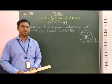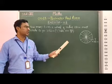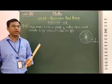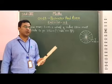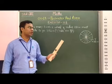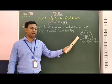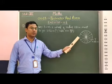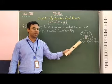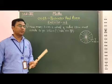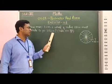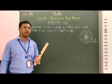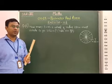Students, first of all, we have to find out the circumference of this wheel, because in one rotation this wheel covers a distance equal to its circumference. Therefore, here we have to find out the circumference of this wheel. After that, we divide the total distance by the circumference, and then we will get the number of rotations.